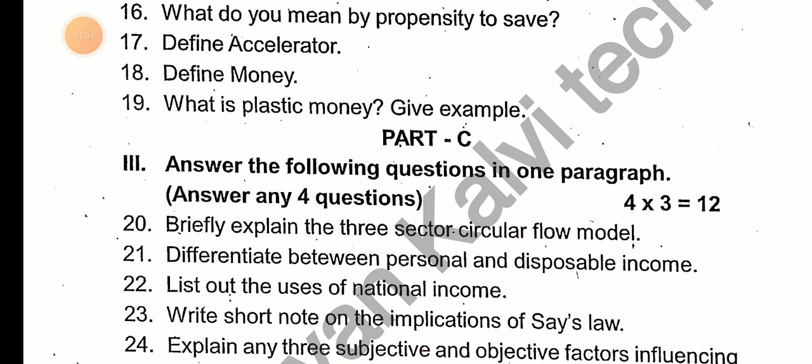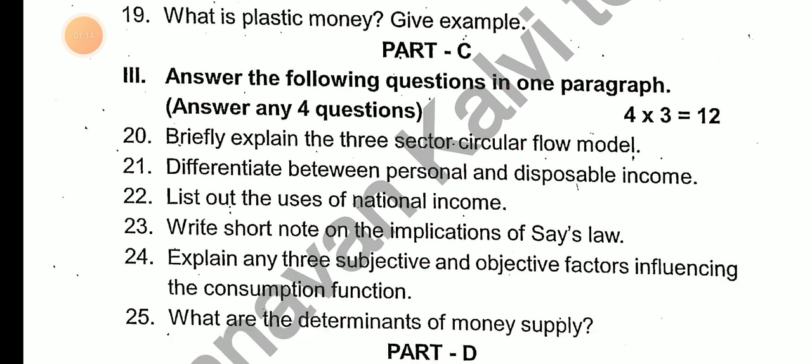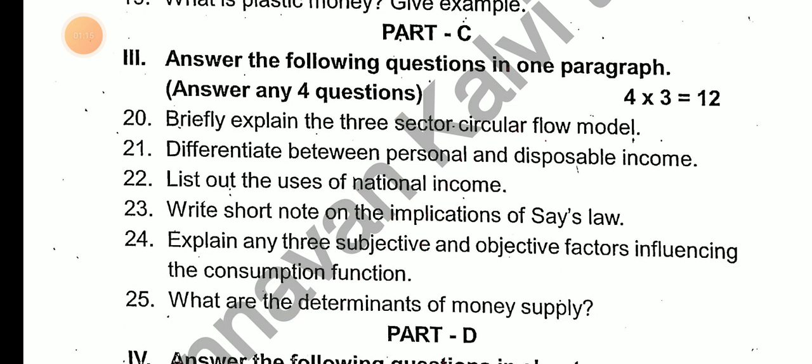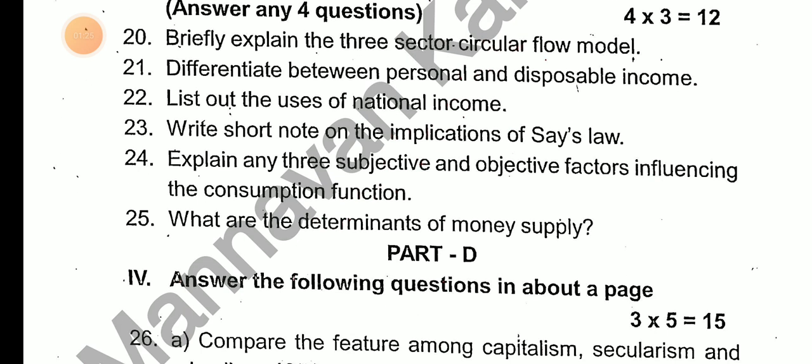Answer the following questions in one paragraph. Answer any 4 questions: briefly explain the 3-sector circular flow model, difference between personal and disposable income, list out the uses of national income, write a short note on the implications of Say's Law, explain any 3 subjective and objective factors of the consumption function, what are the determinants of money supply?